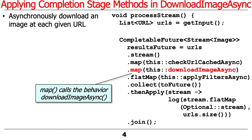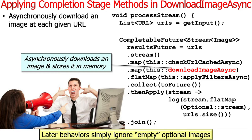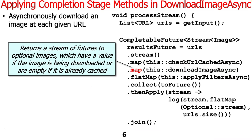DownloadImageAsync is going to take that stream as a parameter and then decide whether or not to download the image asynchronously, assuming it wasn't already cached. The map method here will return a stream of CompletableFutures to Optional images instead of Optional URLs, which is what came as the input to this map.